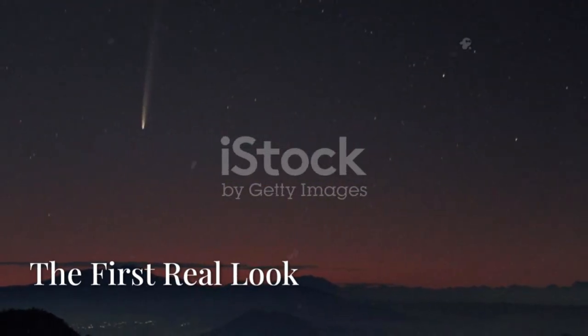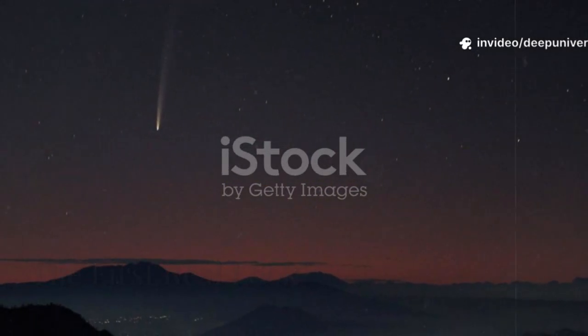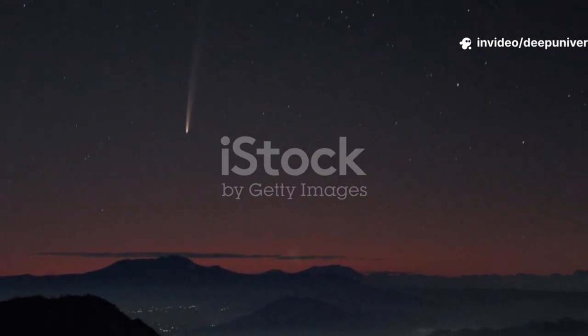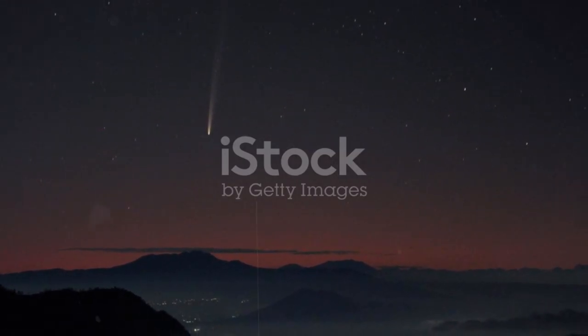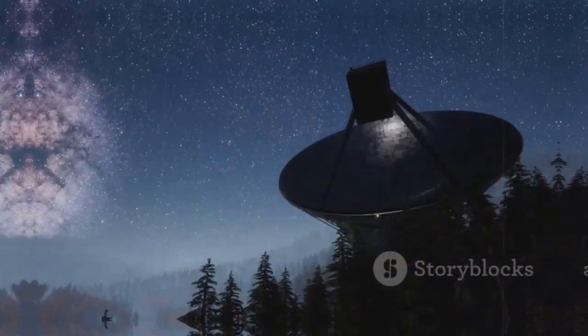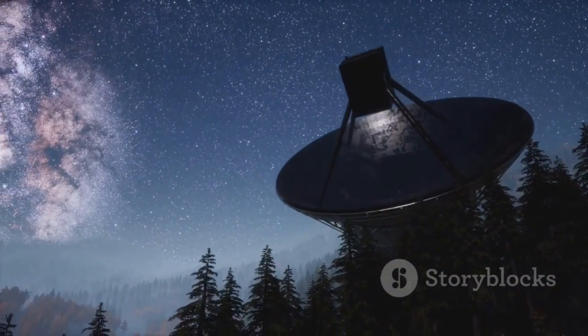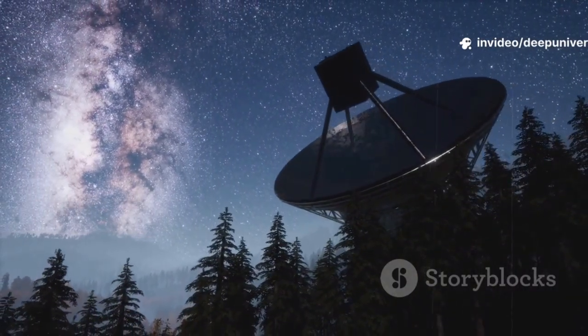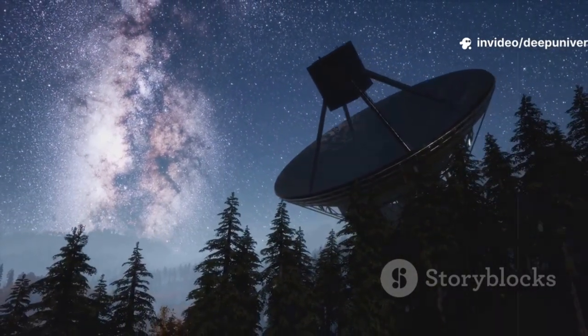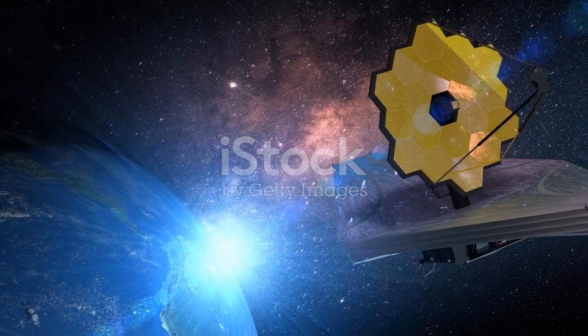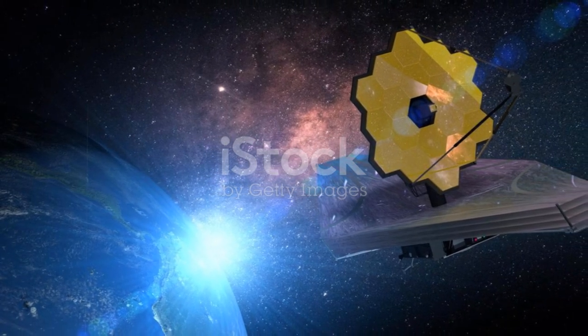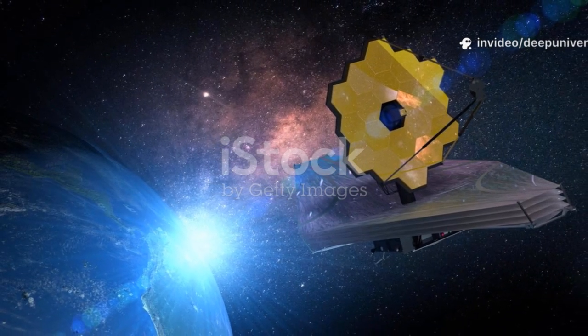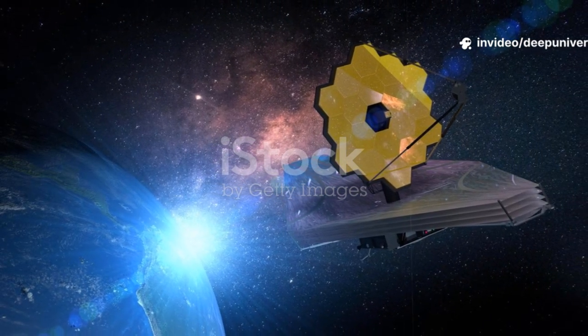With the confirmation of 3i Atlas, excitement rippled through the astronomical community. This was only the third known interstellar object to visit our solar system, and the first to be clearly identified as a comet. The world's top observatories, from mountaintops to space, turned their gaze to this rare visitor, eager to capture every possible detail before it slipped away forever. The James Webb Space Telescope, designed for moments of cosmic discovery, was quickly tasked with observing the comet in near-infrared light, a wavelength perfect for studying cold distant objects.